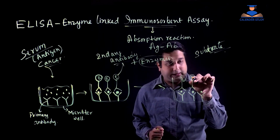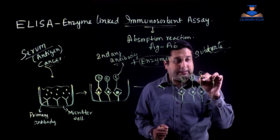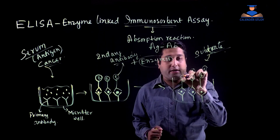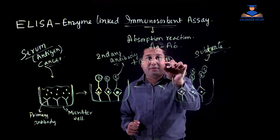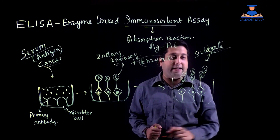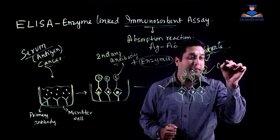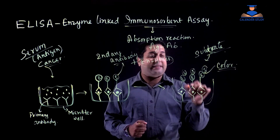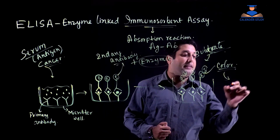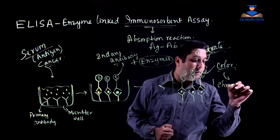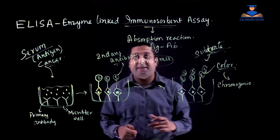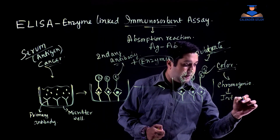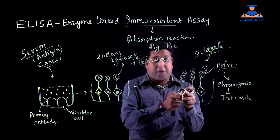This substrate binds with the enzyme present in the microtiter well. When this substrate binds with the specific enzyme that is attached to the secondary antibody, it generates a color. This formation of color during the antigen-antibody reaction is known as the chromogenic reaction — 'chromogenic' means the reaction that generates color.